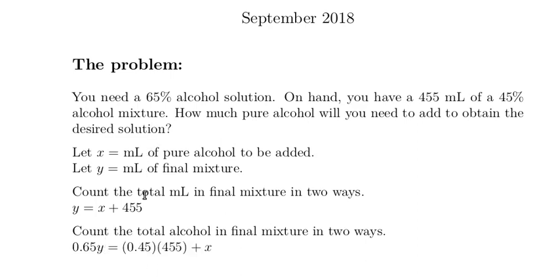The alcohol comes from two places: one from the 45% mixture, of which there is 455 milliliters, so that's (0.45)(455) milliliters of alcohol from the original mixture, plus the pure alcohol x that we're going to add.